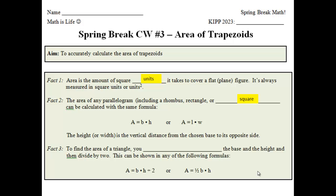Fact number 3. That was our last classwork. The one you guys just completed. It says to find the area of a triangle, you blank the base and the height, and then divide by 2. This can be shown in any of the following two formulas. Area equals base times height divided by 2, or area equals 1 half times the base times the height. What word do you think should go in that blank? Go ahead and call it out. If you said multiply, you are correct. So that's just a quick review.